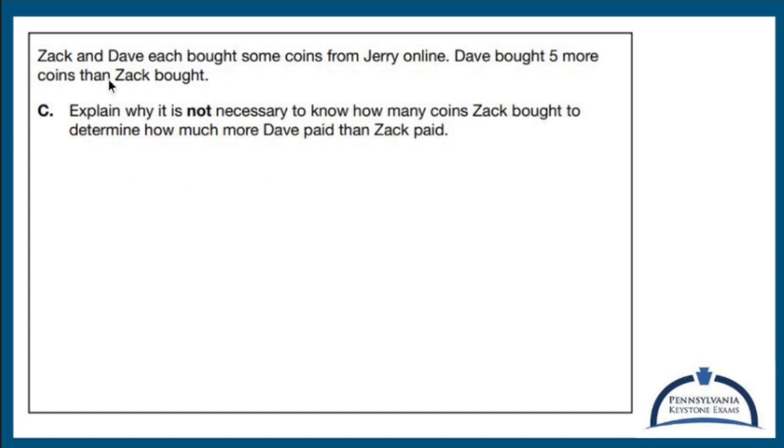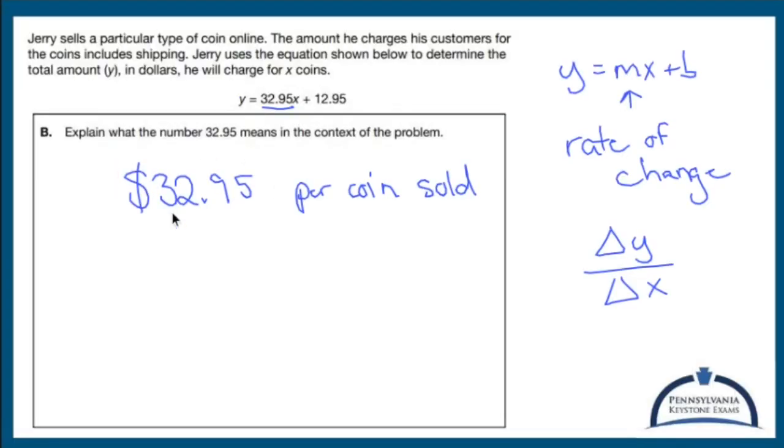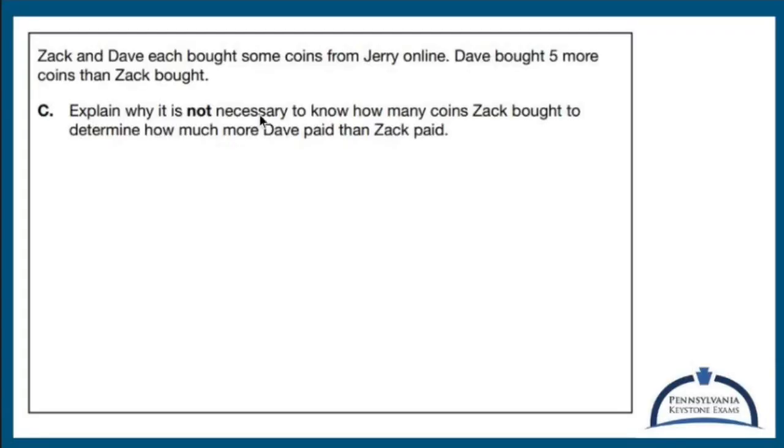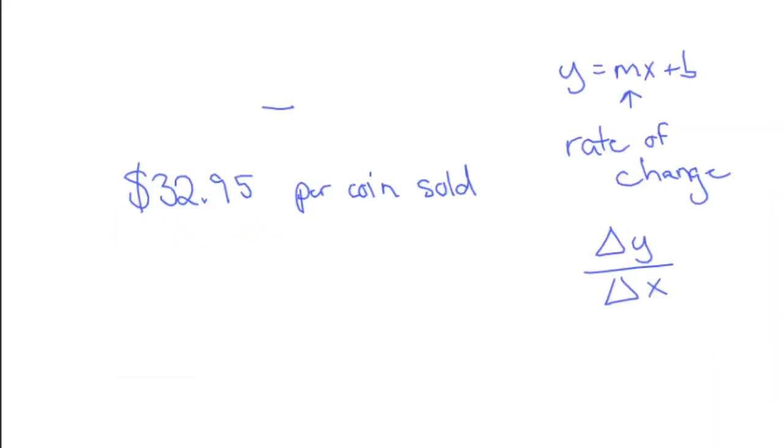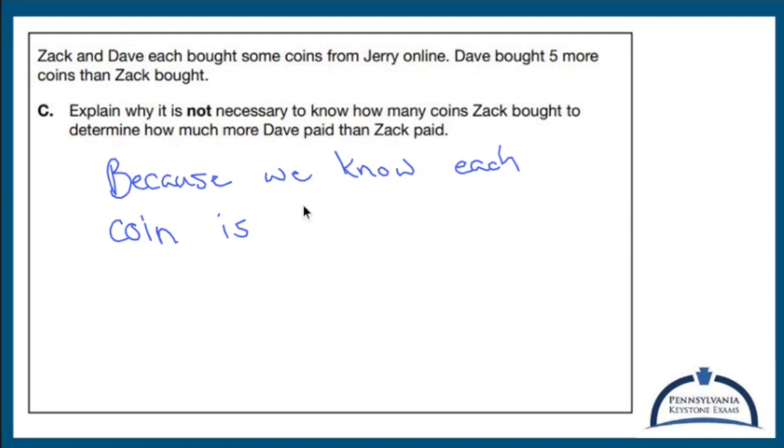Well, it's not necessary to know how much each guy bought. I know they're going to end up paying like a hundred sixty some dollars because we know each coin is always $32.95.